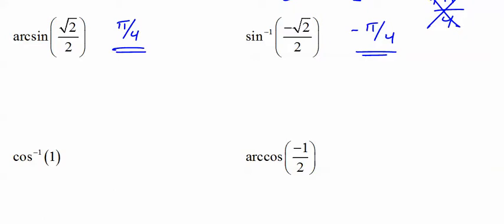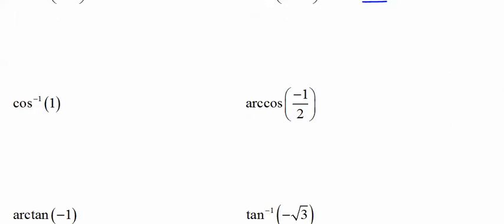I would pause the recording and try these yourself, because I'm going to do them now. Where does cosine equal 1? At 0 — a lot of people say 2 pi, but that's not between 0 and pi, which is where we define arccosine. Where does arccosine equal negative one-half? 2 pi over 3.